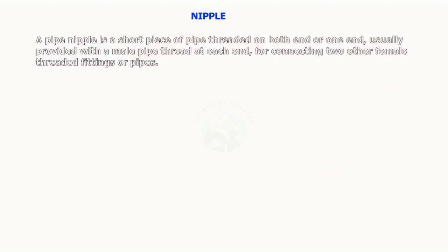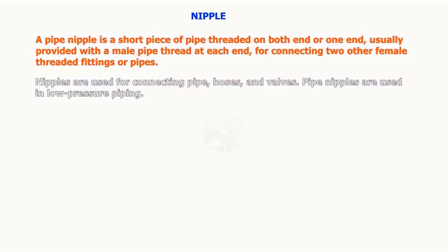A pipe nipple is a short piece of pipe threaded on both ends or one end, usually provided with a male pipe thread at each end for connecting to other female-threaded fittings or pipes. Nipples are used for connecting pipe, hoses, and valves. Pipe nipples are used in low pressure piping.